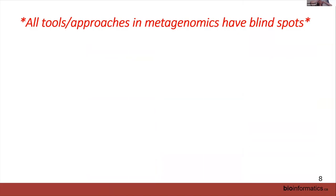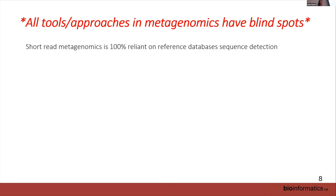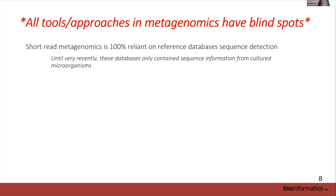There are always blind spots in everything we do in metagenomics. When you've learned about short-read techniques, the reality is they're 100% reliant on reference databases — if you're going to detect an element of sequence, it needs to be in a database, otherwise you won't see it. We actually call the things you don't see the 'dark matter.' What we're going to talk about this afternoon is how we can get around that by using de novo assembly — to detect sequences without being 100% reliant on a reference database.